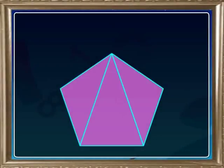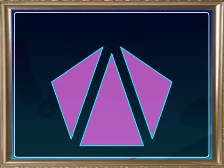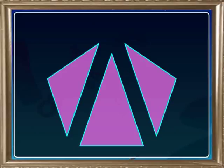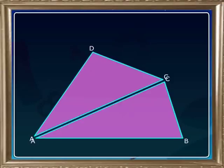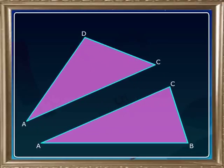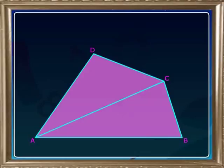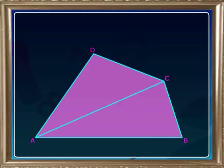A polygonal region can be divided into two or more triangular regions. In this diagram, the quadrilateral region ABCD is divided into two triangular regions ADC and ABC. Or, we can say that the quadrilateral region ABCD is the union of two triangular regions ABC and ADC.